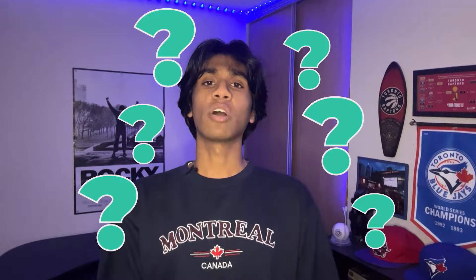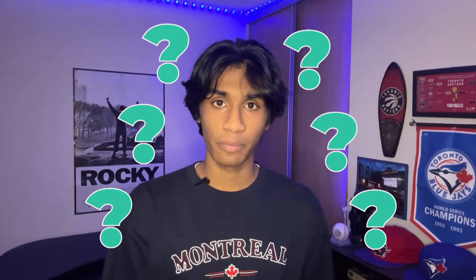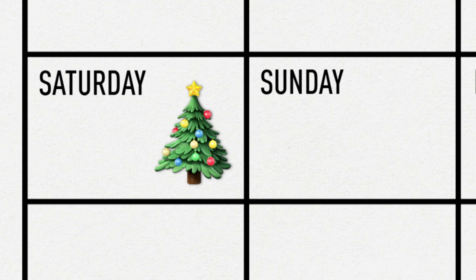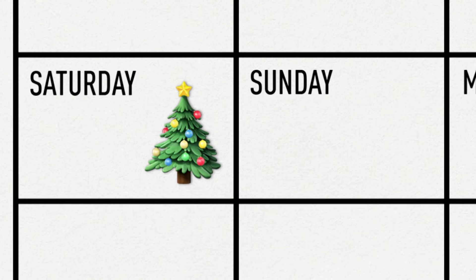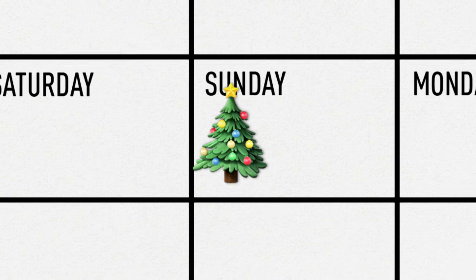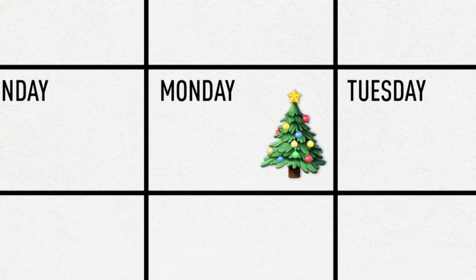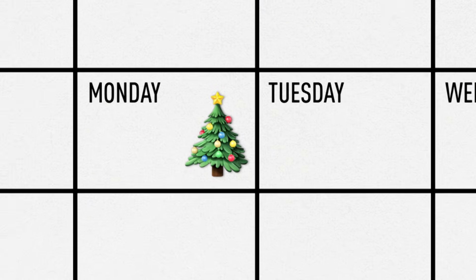So why is it called a leap year? In a normal year, every date moves forward one day of the week each year. For example, December 25th — Christmas Day — was on a Saturday in 2021, a Sunday in 2022, and a Monday in 2023.